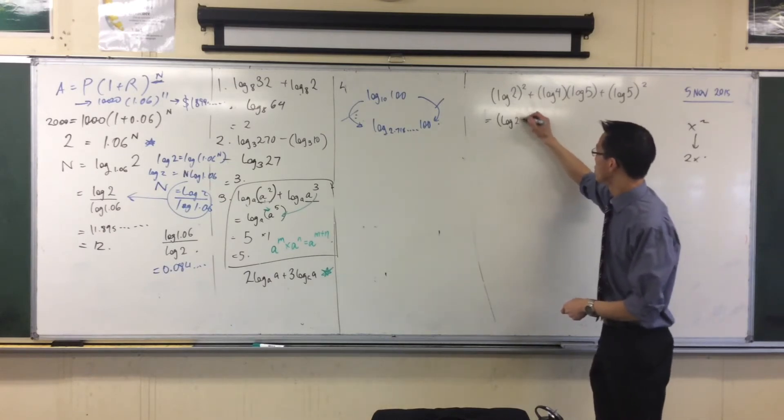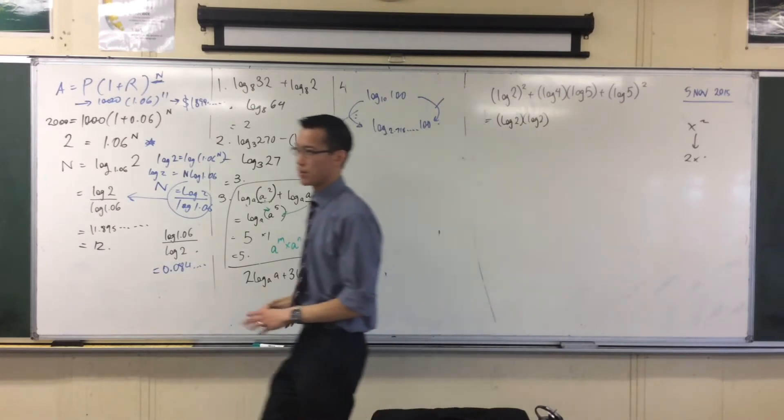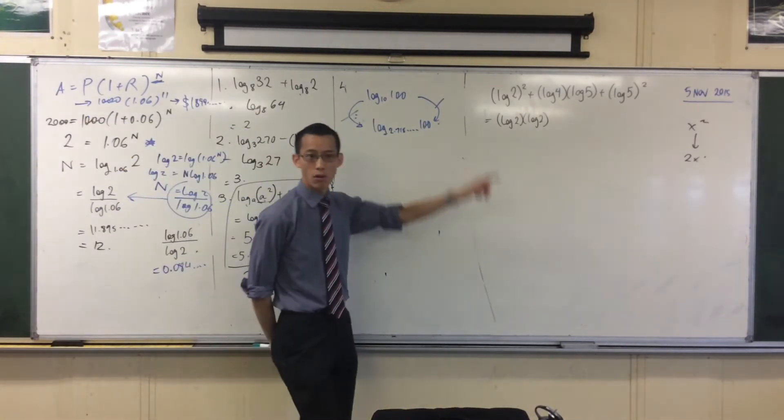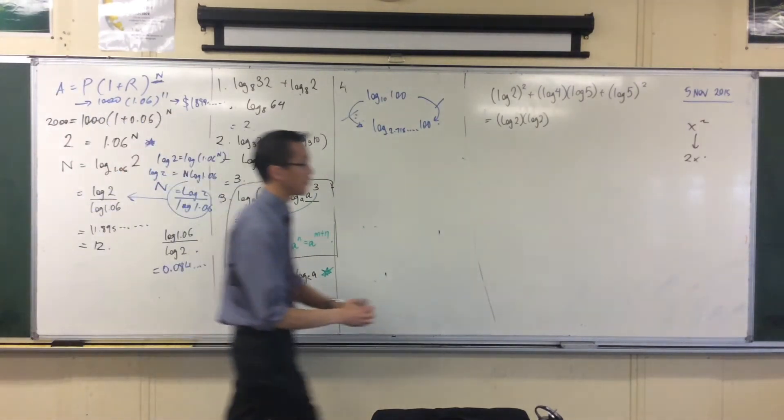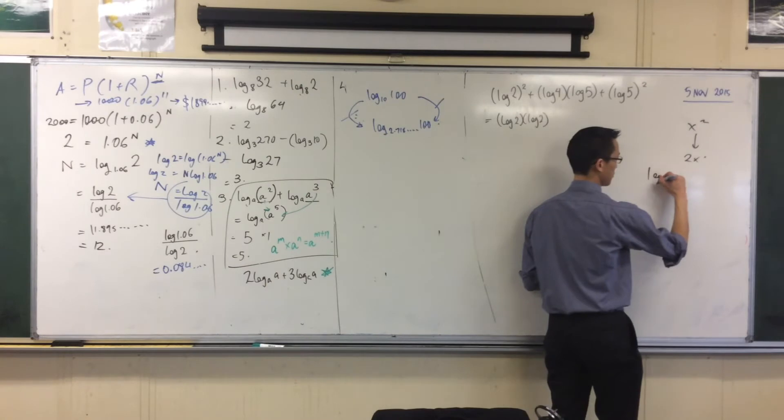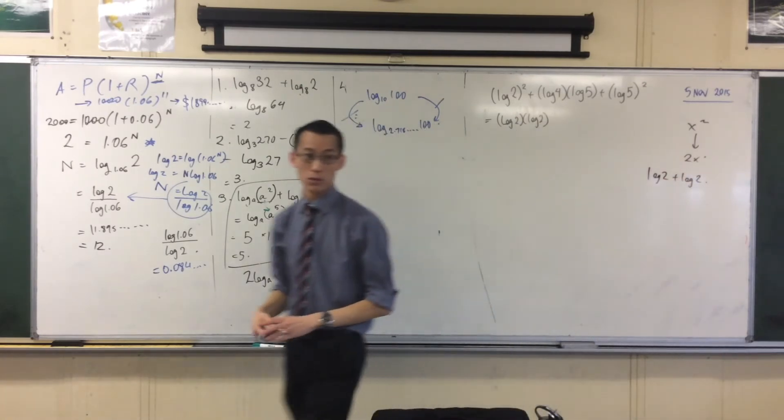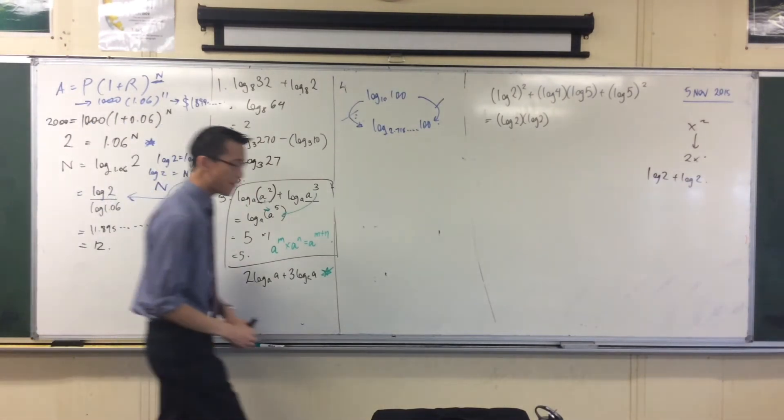Ah, multiply this 2 by this square. Okay, let's think about what this means. If I just pedal back a second, right? Log 2 squared, when you have something and it's squared, what does squaring mean? Multiply by itself. Yeah, multiply by itself, right?